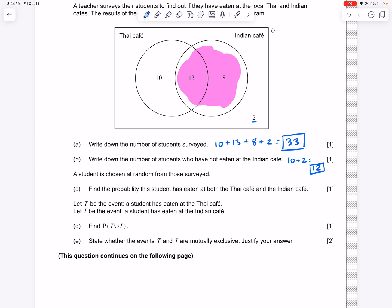So now it's asking to find the probability that a student chosen at random. Hold on. Let's make sure we actually read this part first. A student is chosen at random from those surveyed. Okay.